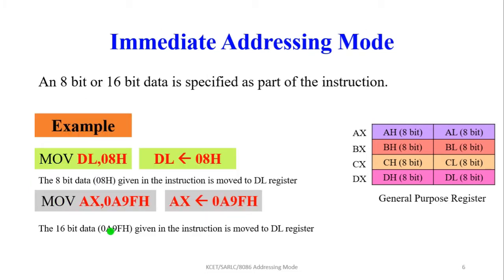Immediate addressing mode: here 8-bit or 16-bit data is directly specified as part of the instruction. For example, MOV DL, 08H — the value 08H is directly moved into the DL register because it is an 8-bit value. The instruction contains direct data. Similarly, a 16-bit data value is directly moved into the AX register. This is called immediate addressing mode.